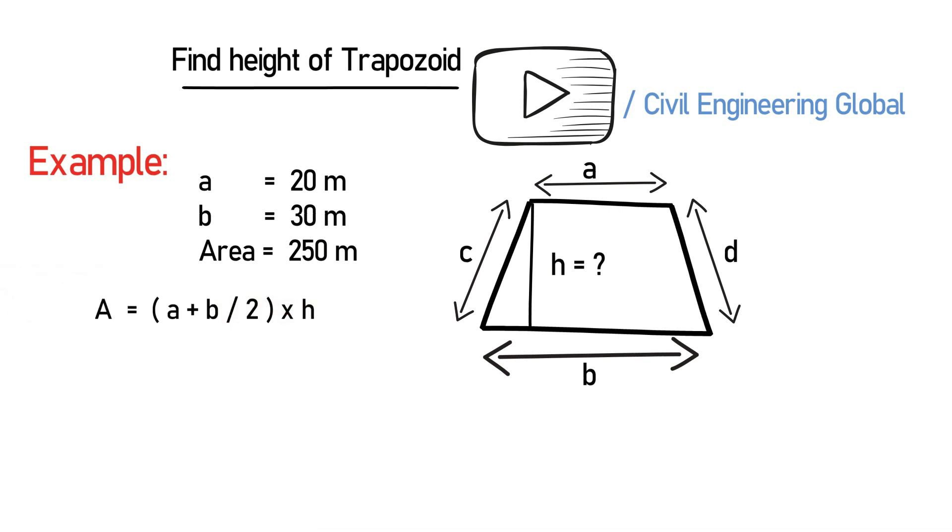A plus b divided by 2 multiplied by h. So to calculate the height, we have the formula h is equal to 2 multiplied by area divided by a plus b. So putting the values of area, a, and b, we get...